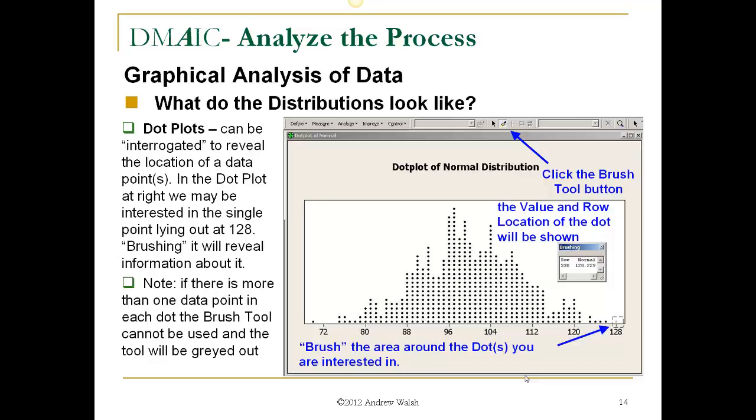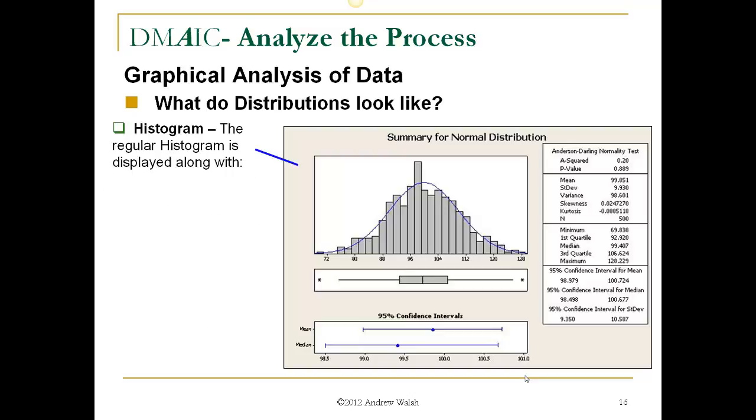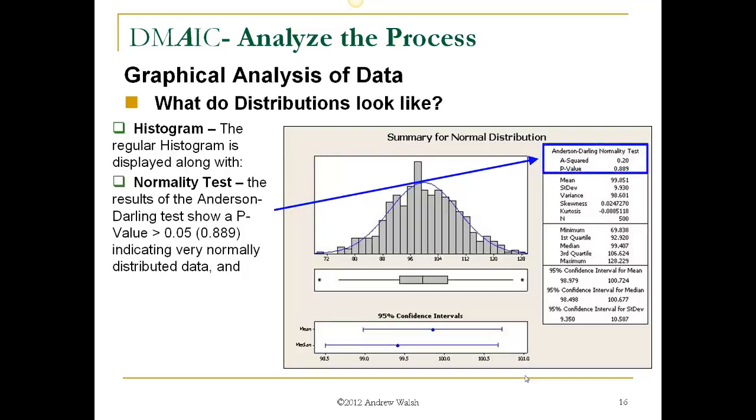Graphical summaries. These plots combine the graphical information of a histogram, a box and whisker plot, and the confidence interval plot, and the descriptive statistics that Minitab generates for all these three plots. The graphical summary can quickly tell the story about your data or process. So the histogram is displayed along with its normality test. And the results of the Anderson-Darling show a p-value greater than .05, .889, indicating very normally distributed data. And the descriptive statistics, the mean, standard deviation, along with the variance, skewness, and kurtosis, and the number of data points are shown.